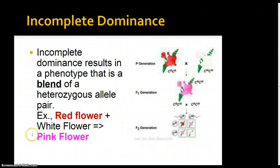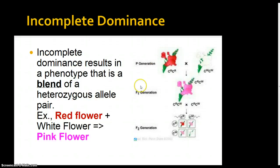The first one that we're going to look at is called incomplete dominance. I'm sure you've seen this one in nature — it's very common. Incomplete dominance results in a phenotype that is a blend of a heterozygous allele pair. Normally under Mendelian genetics, if we have a black and white mouse that are crossed, we get black or white. Well, in incomplete dominance, a good example is flower color.